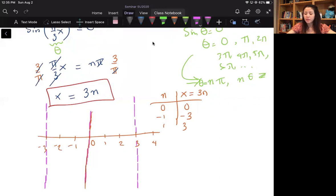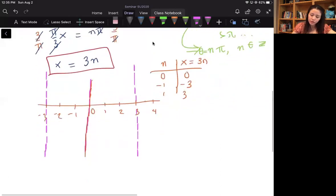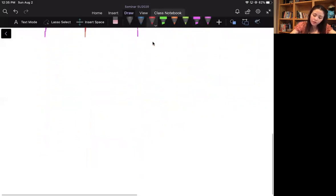And you can replace it with n equals negative 2, 3, 4, 5, etc.